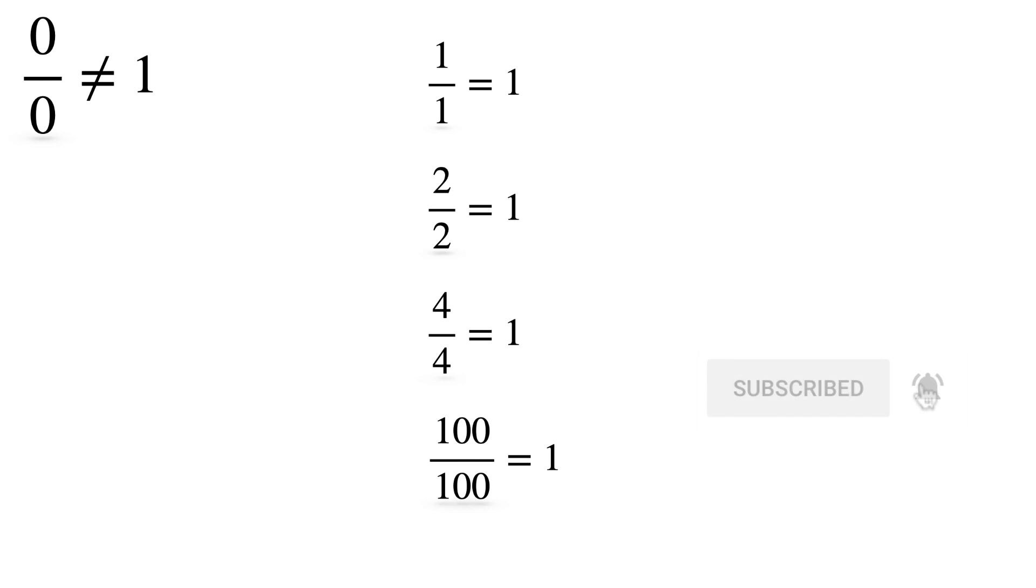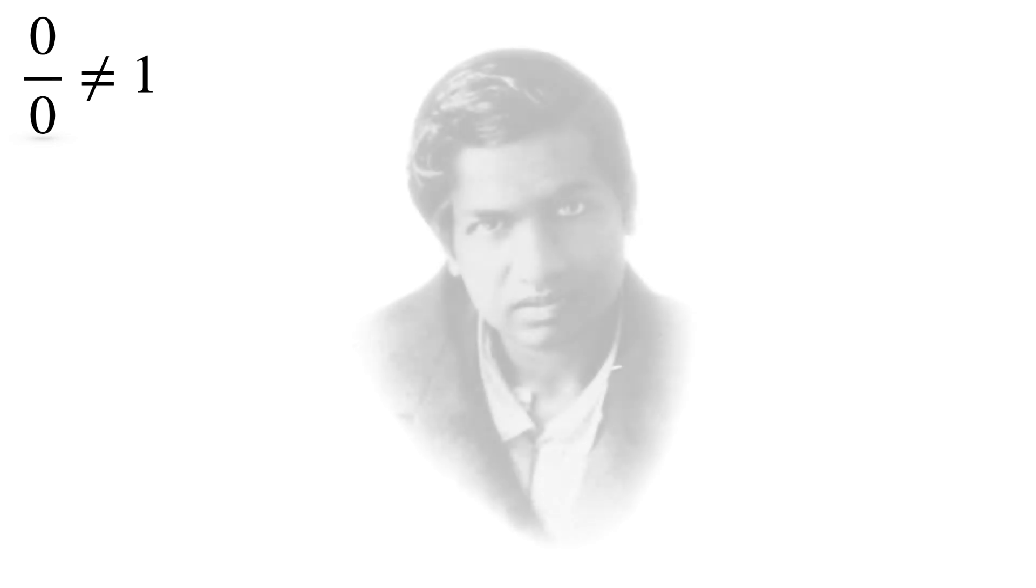Let me explain now why 0 by 0 is not equal to 1. There is a very interesting story about 0 by 0. A teacher once said, any number divided by itself gives the quotient 1.